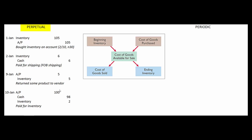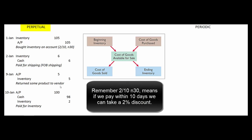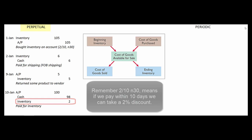Then on January 10th, we finally pay. That inventory we originally bought for $105, so the accounts payable was originally $105. We reduced it by $5, so we actually owe them only $100 now. But since we paid it within 10 days, we take a 2% discount. So we take that accounts payable off our books, we write a check for $98, and the $2 purchase discount we got for paying the bill early enough we use to directly decrease the cost of our inventory.